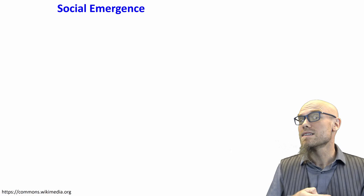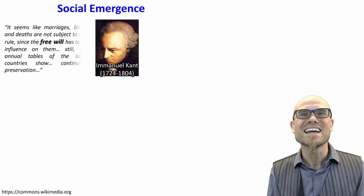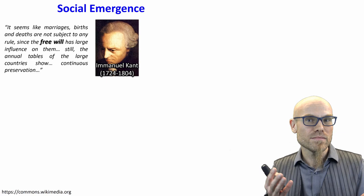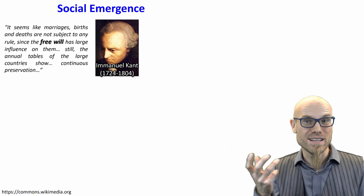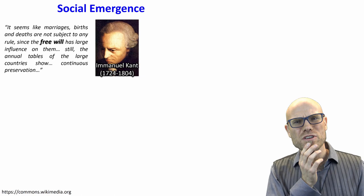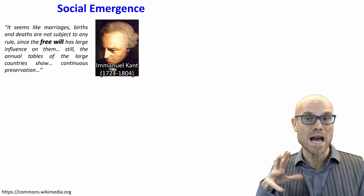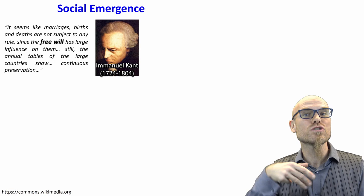All the big scientists and influential thinkers have pointed to this as the major problem. Starting with philosophy — Immanuel Kant was fascinated by this. He said marriages, birth, and death are not subject to any rule since free will has large influence on them. Still, the annual tables of large countries show continuous preservation. That baffled him: how can we all have free will, yet from a bird's-eye view you can make predictions on how many people will get married? On this higher level we can look for laws, rules, and patterns and do social science.